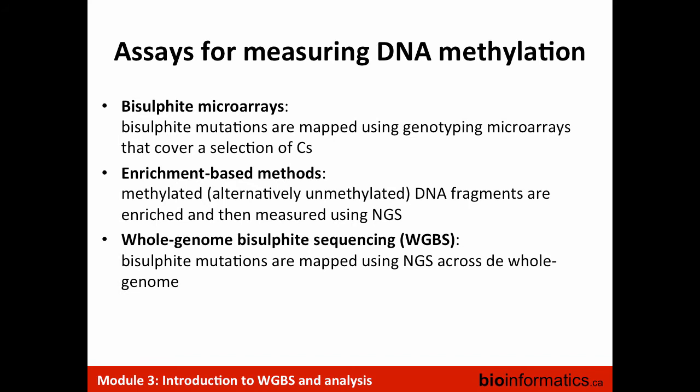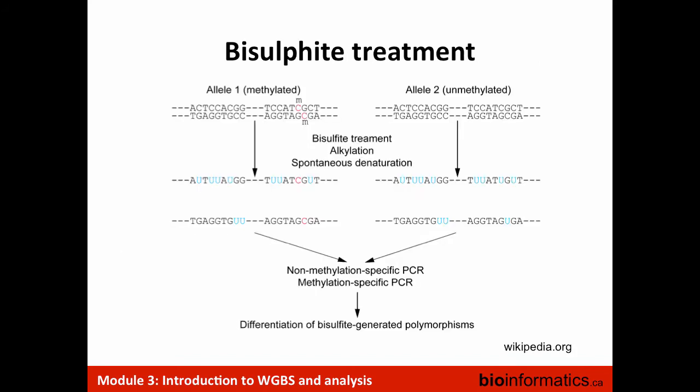So how do we assess methylation? There are three broad categories to measure DNA methylation. First, bisulfite-converted microarrays. Second, enrichment-based methods where you select DNA fragments that are enriched for methylation or unmethylated state and measure using next-generation sequencing. Third, whole genome bisulfite sequencing. A key step for most of these approaches is the bisulfite treatment, which is also going to significantly affect the downstream analysis.